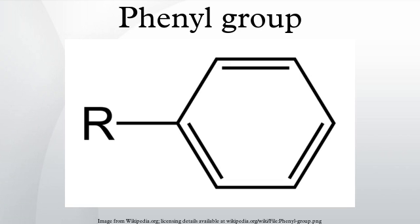Nomenclature: usually, a phenyl group is synonymous to C6H5, and is represented by the symbol Ph or, archaically, φ. Benzene is sometimes denoted as PhH. Phenyl groups are generally attached to other atoms or groups. For example, triphenylmethane has three phenyl groups attached to the same carbon center.